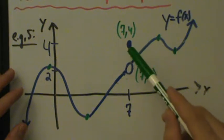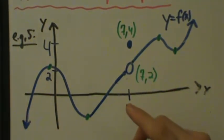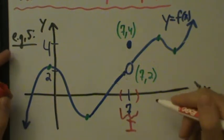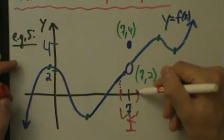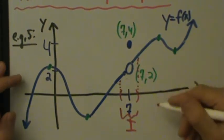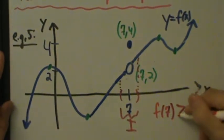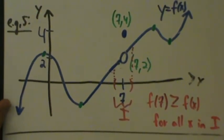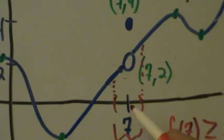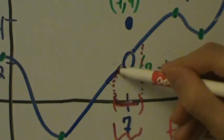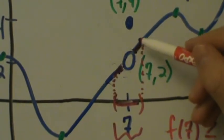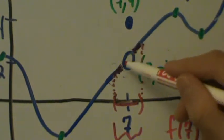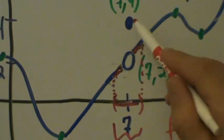Is this a local max now? It's kind of weird, but yeah, it actually is a local max — it does satisfy the definition. Let's put a little tiny open interval I around x equals 7. Here's our open interval I. We do see that f of 7 really is greater than or equal to f of x for all x in this interval I. So any value of x that we pick in this interval is going to correspond to something on this piece here and here, but they're all down below (7, 4). So f of 7, which is 4, really is greater than or equal to f of x for all these x values in here. This does satisfy the definition for a local max.